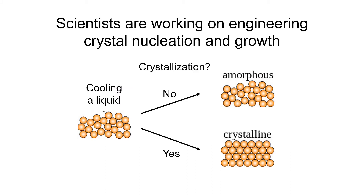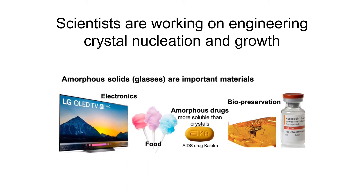Sometimes scientists do not want the liquid to crystallize. If a liquid is cooled without crystallization, it will finally become amorphous solids called glasses — for example, like window glass. Glasses are important materials. For example, some electronics are made into glasses and used in OLED. In pharmaceutics, some drugs are developed in a glassy state. In some cases, these glasses show advantages over crystals, and that's why scientists are working on better inhibiting crystal nucleation and growth to produce better glasses.